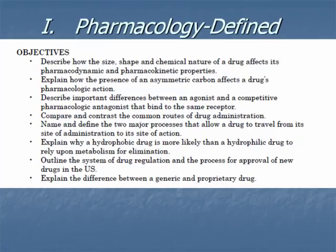Good afternoon and welcome. In today's lecture we're going to cover the following objectives: students should be able to describe how the size, shape, and chemical nature of a drug affects its pharmacodynamic and pharmacokinetic properties; to explain how the presence of an asymmetric carbon affects a drug's pharmacologic action; and to describe important differences between an agonist and a competitive pharmacologic antagonist that bind to the same receptor, and compare and contrast common routes of drug administration.